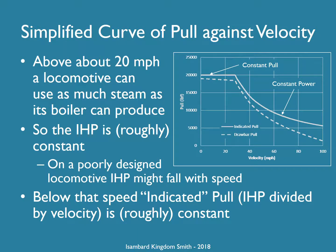This graph shows pull or force or tractive effort against velocity. Power in the cylinders — indicated horsepower — is roughly proportional to the amount of steam the boiler can produce. So once the locomotive is moving fast enough for the cylinders to be able to use all the steam the boiler can provide, indicated power is roughly constant above about 20 miles an hour, depending on the locomotive. Below that speed, indicated pull is roughly constant or slightly declining, giving the following curve for indicated pull against speed.